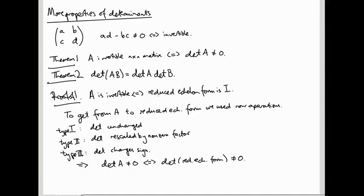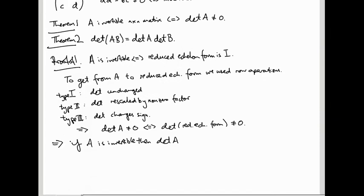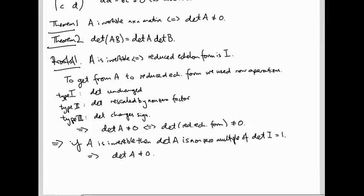A is invertible if and only if the reduced echelon form is the identity. So if A is invertible, then det(A) is a non-zero multiple of det of the identity, and det of the identity is 1. So being a non-zero multiple of 1 means you're non-zero. So if you're invertible, your determinant is not zero.